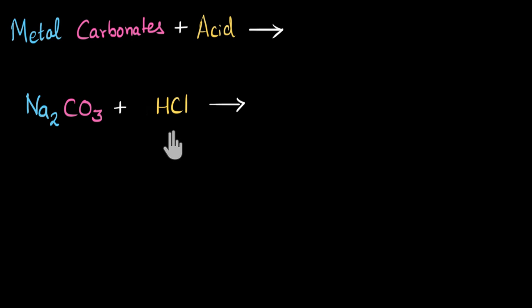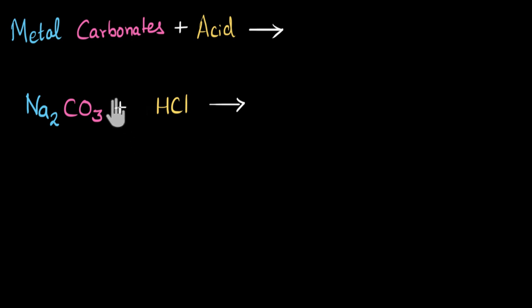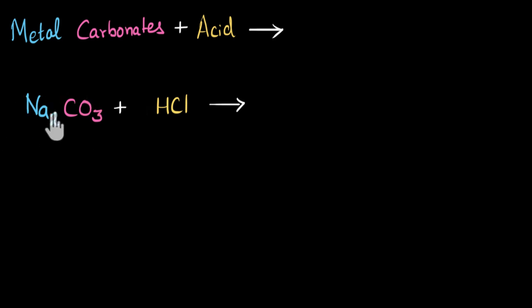Can you pause the video and try to think about what the products of this reaction are going to be? When I mix sodium carbonate and HCl in an aqueous solution — meaning in water — from sodium carbonate I will get sodium plus ions and carbonate minus two ions.